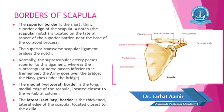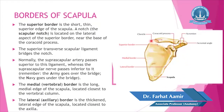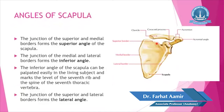The medial border is also called the vertebral border because it is related to the vertebral column. It is the long medial edge of the scapula, closely located to the vertebral column. The lateral border is also named the axillary border — it is thickened, is the lateral edge of the scapula, and is located closest to the axilla.